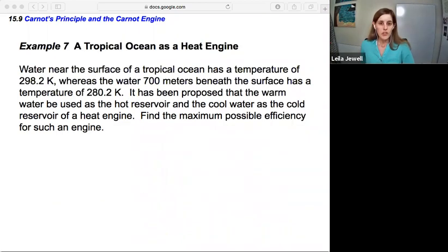So example seven, a tropical ocean as a heat engine. Water near the surface of a tropical ocean has a temperature of 298.2 Kelvin, whereas the water 700 meters beneath the surface has a temperature of 280.2 Kelvin. It has been proposed that the warm water be used as the hot reservoir and the cool water as the cold reservoir of a heat engine. Find the maximum possible efficiency for such an engine.